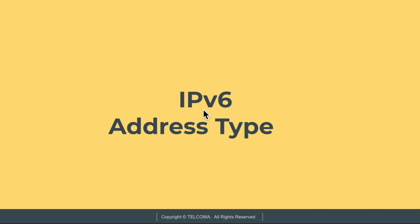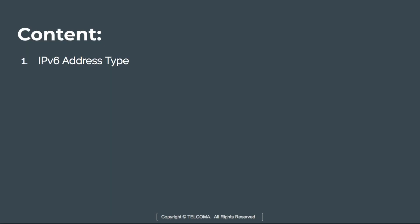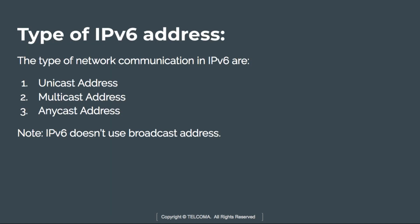Hello, welcome to the course on IPv6. Today we are going to discuss the types of addresses in IPv6. The types of network communication in IPv6 are unicast address, multicast address, and anycast address. Note that broadcast addresses are not used in IPv6.